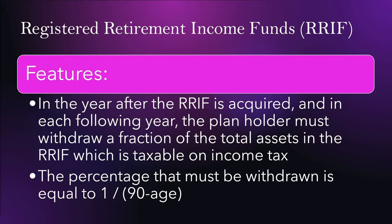In a registered retirement income fund (RRIF), in the year after it is acquired and each following year, the plan holder must withdraw a fraction of the total assets, which is considered taxable income. That's the key difference from an RRSP. As a general rule of thumb, the percentage that must be withdrawn is equal to 1 divided by (90 minus the holder's age). This is an estimate and may not always be the exact figure, but it is a good rule to go off of.